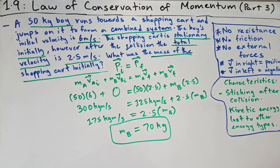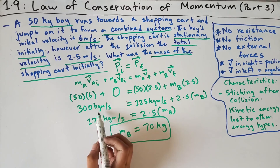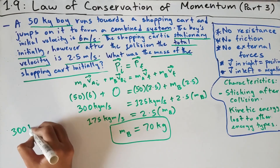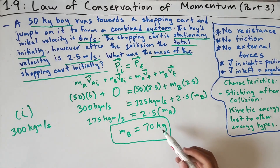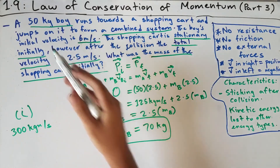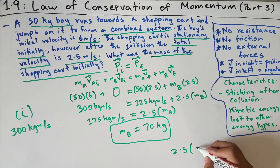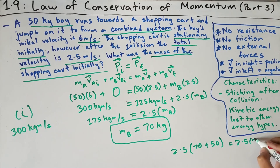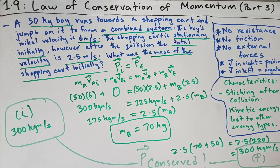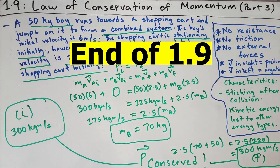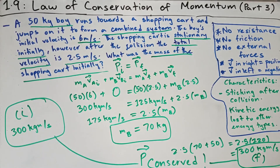Let's verify momentum is conserved. Before the collision: boy's momentum = 300 kg·m/s, shopping cart's momentum = 0, so total initial momentum = 300 kg·m/s. After the collision: combined mass = 70 + 50 = 120 kg, times 2.5 m/s = 300 kg·m/s. Momentum is indeed conserved. That's it for section 1.9. I hope your understanding of the law of conservation of momentum is enhanced — leave a like, comment with feedback, and I'll see you in the next video. Thanks for watching.